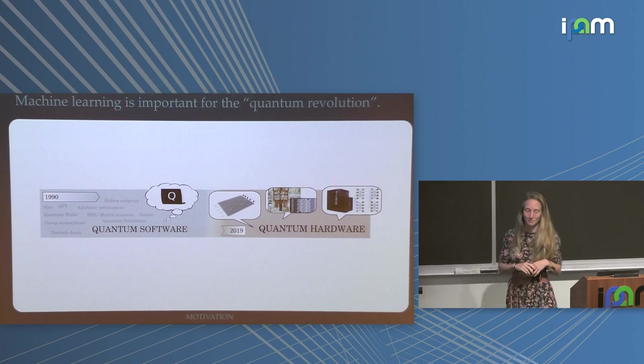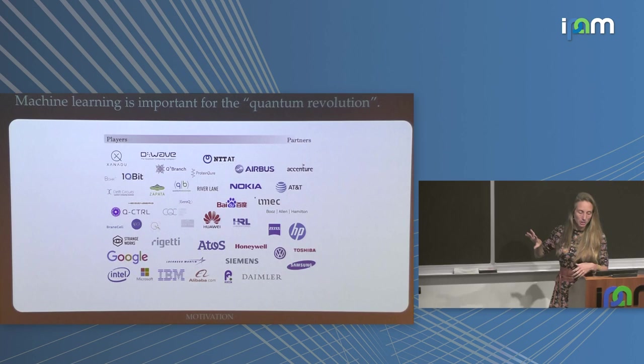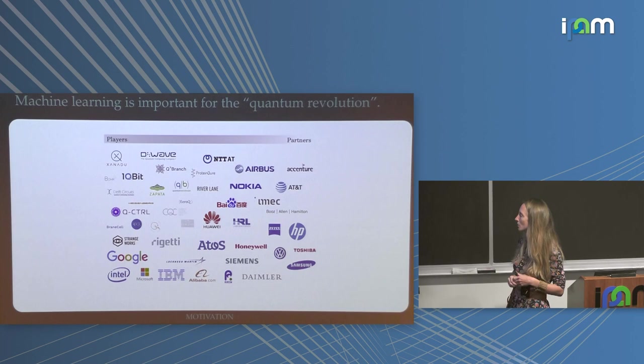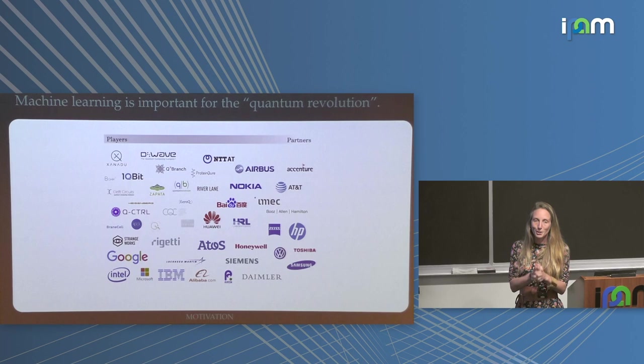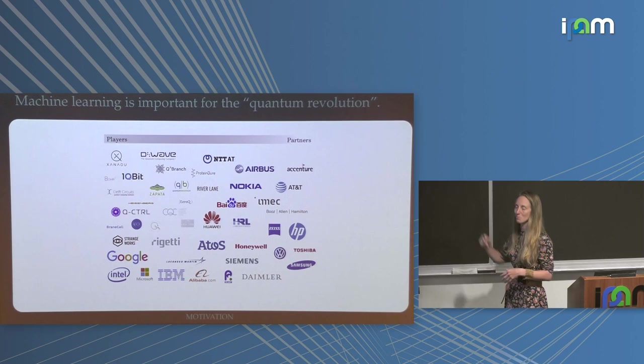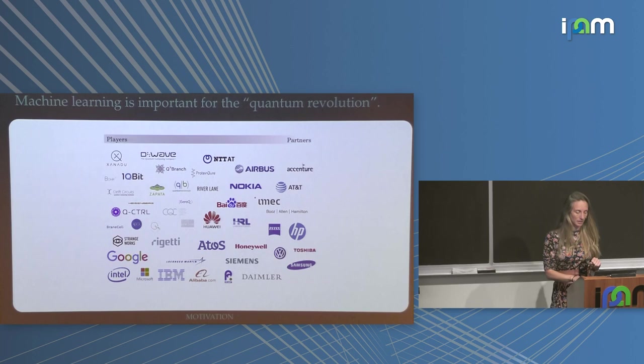In this field we actually start needing machine learning as an application — we're desperate for an application for these near-term devices. You can see this when you look at the landscape: companies investing in quantum computing include some you wouldn't even think have anything to do with it. A lot of them have at least small knowledgeable teams. Very often it's not the CEO saying we need quantum computing, but some physicist who's an employee saying this is what I always wanted to do — so they try to convince their bosses. Xanadu is one of the startups trying to build a quantum computer and find applications.